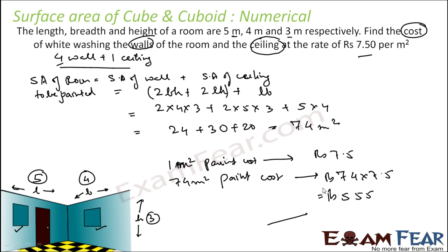That wasn't very difficult. Five sides of the room have to be painted, and if you can come up with this formula, you just have to put in the values and get the answer.